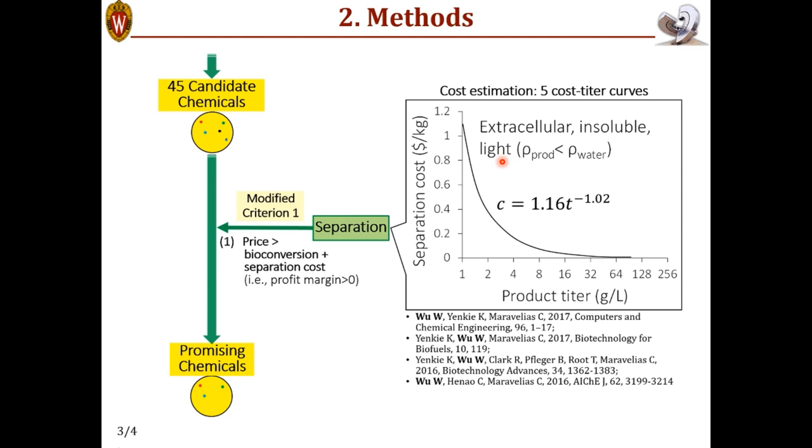Now, how do we use the curves? From the metabolic models in the previous slide, the titer for each product can be estimated. So we can simply read the corresponding cost from this curve. And then we incorporate that into the modified criterion one to finally identify the promising chemicals.